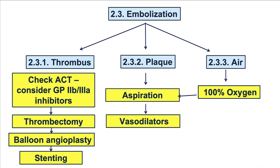How to treat embolization if it occurs? When it comes to thrombus, it is important to check the activated clotting time to ensure it is in the therapeutic range. For PCI without 2B3A inhibitors, the ACT should be 300 seconds or more, or potentially 350 seconds or more for retrograde CTO PCI. If a 2B3A inhibitor or cangrelor is being administered, the ACT goal is usually 200 to 250 seconds. If thrombus is the cause of embolization, thrombectomy is often performed — discussed in a separate video — after which PCI proceeds with balloon angioplasty and stenting.